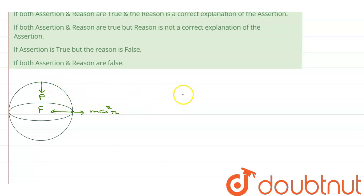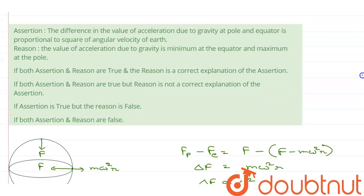So, the difference in the force at pole fp minus f equator is f minus f minus m omega square r. That means delta f is equal to m omega square r, which means delta f is proportional to omega square, that is square of angular velocity of earth.